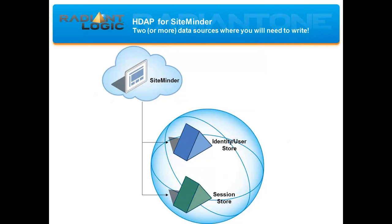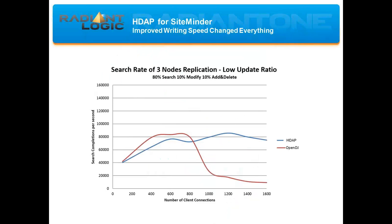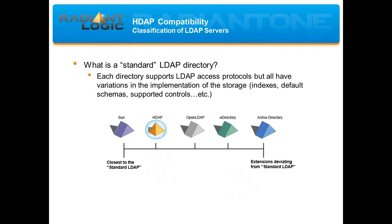With Radiant One, SiteMinder can point to a single logical directory where it can both write password services, policy information, and session information. The storage behind the scenes can be HDAP, but it can still appear like a classic LDAP — like a CA directory — to SiteMinder. This not only simplifies the SiteMinder configuration but will dramatically increase performance. SiteMinder customers who are deploying features like persistent sessions or password services can leverage the HDAP storage in Radiant One and no longer need to worry about the drop in performance when write operations are performed in parallel with searches.